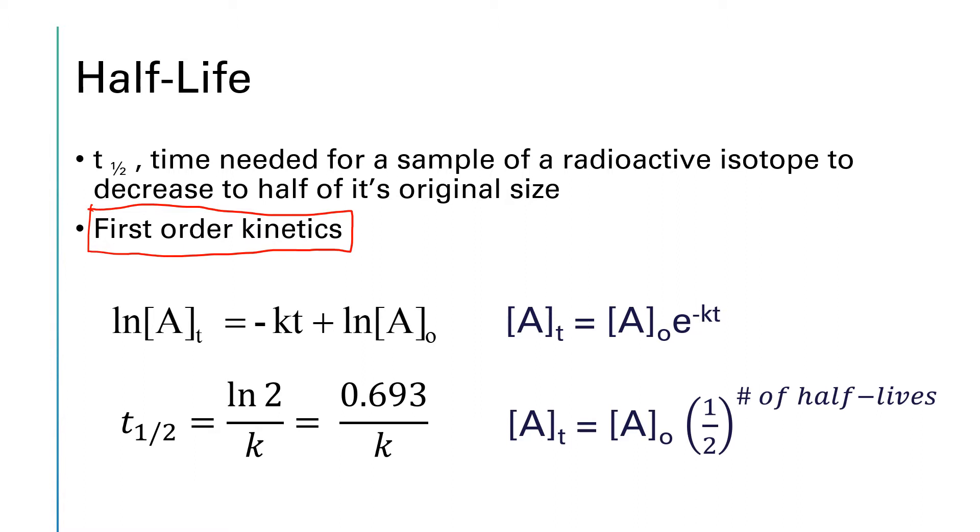Our first order integrated rate law is that the natural log of A sub t is equal to minus kt plus the natural log of A naught. And if you rearrange that equation to solve for A sub t, you end up with A sub t is equal to A naught e to the minus kt.